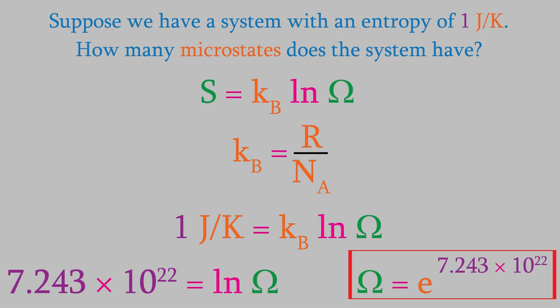That means that the system can be in an enormous number of possible microstates. But that makes it very difficult to use this equation to determine the entropy of a system. Instead, it would be helpful if we could determine the entropy without having to know the number of microstates.